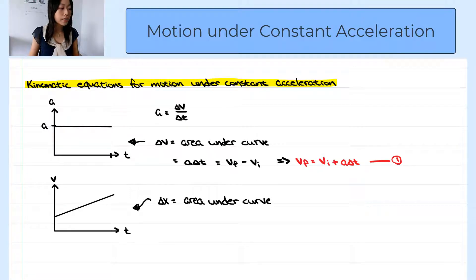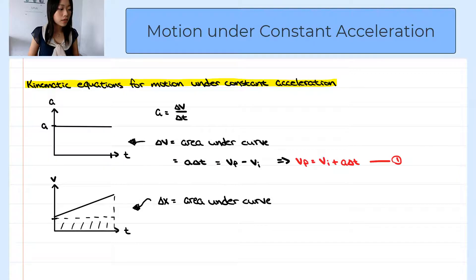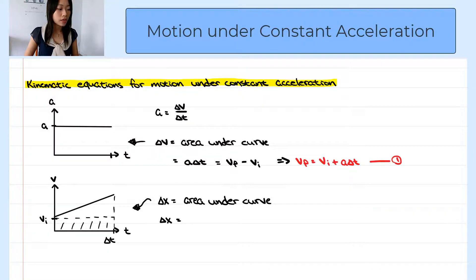To find this area, we can divide it into two smaller areas. The first one would be the rectangle underneath, and the second one would be the triangle above the dashed line. Suppose the initial velocity is v_i and the time is delta t. So delta x would be the sum of the area of the rectangle and the area of the triangle. The area of the rectangle is base times height — the height is the initial velocity and the base is delta t.